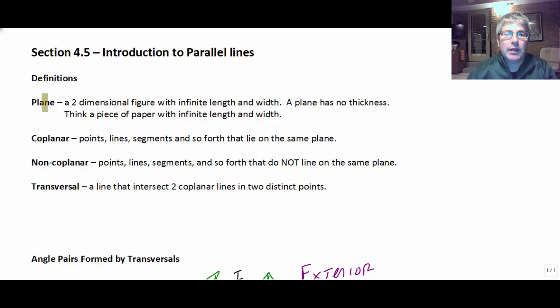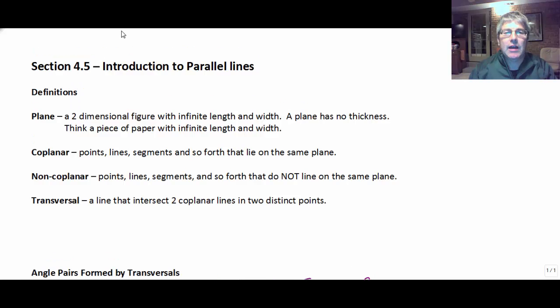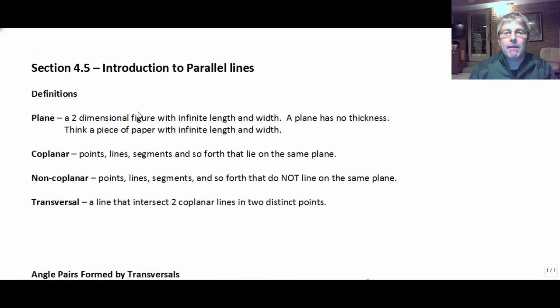We're going to start with the definition of a plane. A plane is a two-dimensional figure with infinite length and width. So a line was just a one-dimensional figure. It was extended infinitely in opposite directions. A plane has both length and width now, and it has no thickness at all. So think of a plane as a piece of paper that just extends forever and ever. It has no thickness whatsoever, but it extends infinitely in both directions.